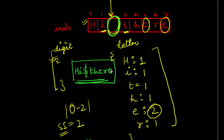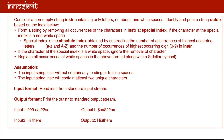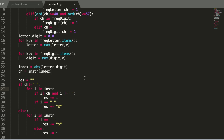To summarize: we maintain two dictionaries — one holding the frequency of each digit, another holding the frequency of each letter. We find the maximum from both dictionaries and by taking the absolute difference we find the special index. At the special index, if there is a character we remove every occurrence of it and replace all spaces with dollar; if there is a white space we simply replace every white space with dollar.